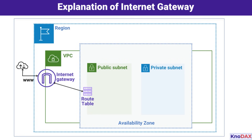By default, AWS provides a VPC in each region, which includes an Internet Gateway, a public subnet in each availability zone, and a route table configured for Internet connectivity. However, for custom VPCs, you need to manually create and attach the Internet Gateway and configure the routes. That concludes our overview of Internet Gateways. We've covered their functionality, how they're pre-configured in default VPCs, and the manual steps required for custom VPCs. Understanding these concepts is crucial for ensuring connectivity while maintaining security in your AWS environment.